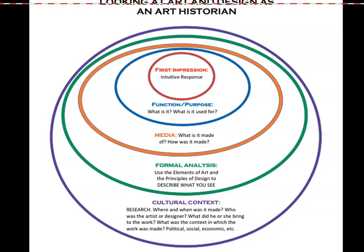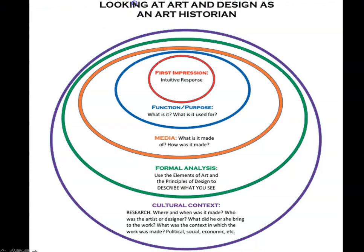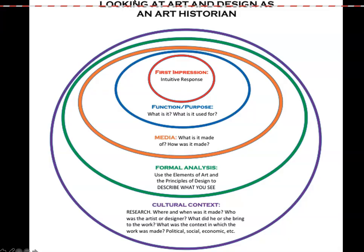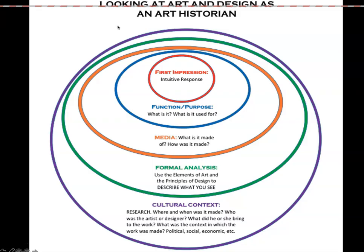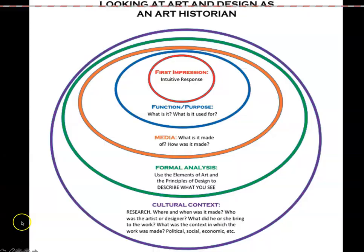We'll keep continuing to think about what art historians do. Looking at art and design as an art historian involves: your first impression, function and purpose, media, formal analysis, and cultural context — thinking through each step as you move through a formal analysis. That's really what your assignment is for next week: formal analysis assignment number one, due by class time next week.